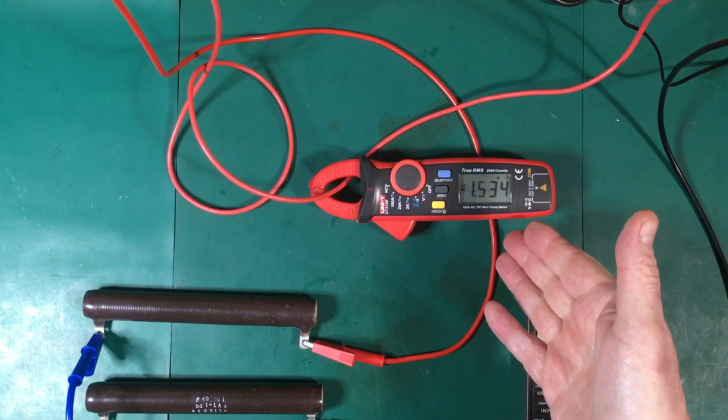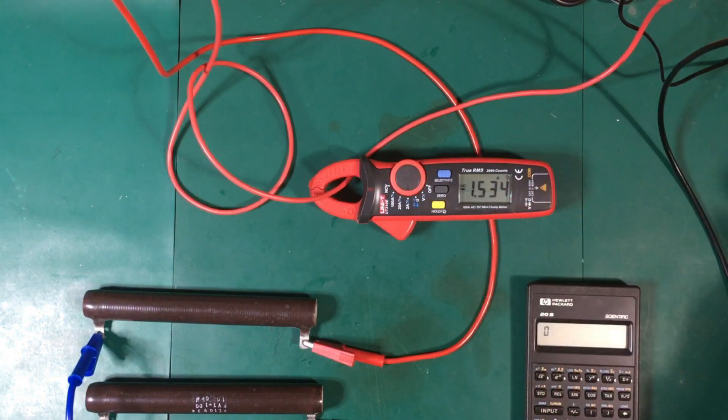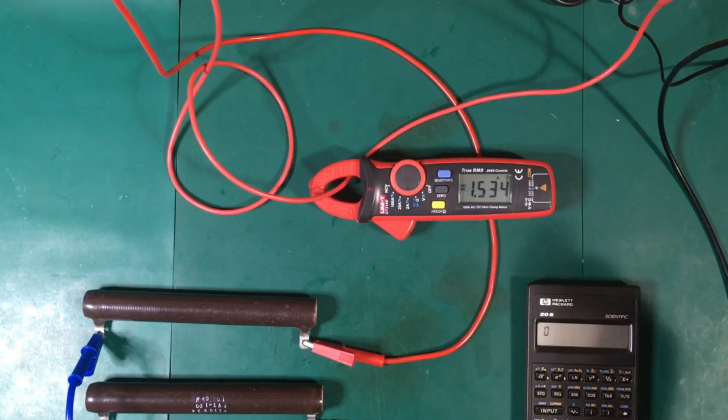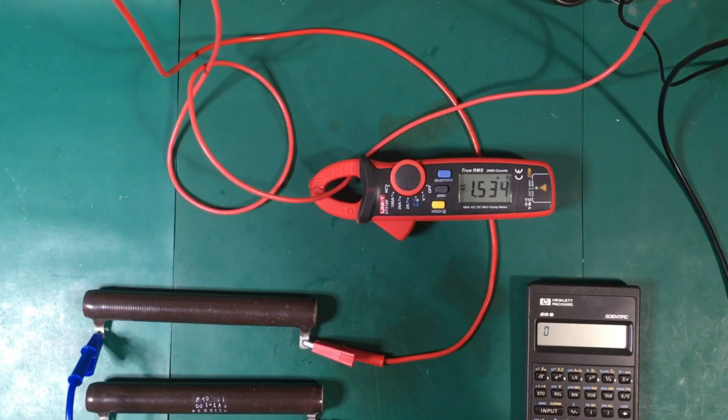Right now we have 1.537 amps going through it and it's reading 1.534, so it's pretty good. We can't really complain about that.